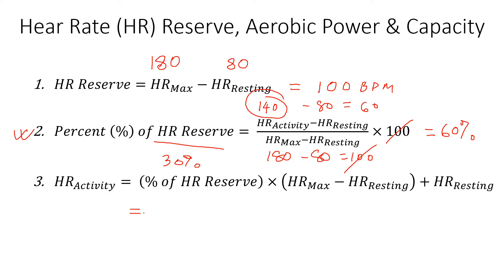0.3 is the percentage — you can always do 30 divided by 100, whatever is easier for you. For this particular person, the reserve is 100: 180 minus 80. This piece we already calculated — check the other two videos on calculating the reserve and also percent of reserve. So 100 is the reserve for this person in beats per minute.